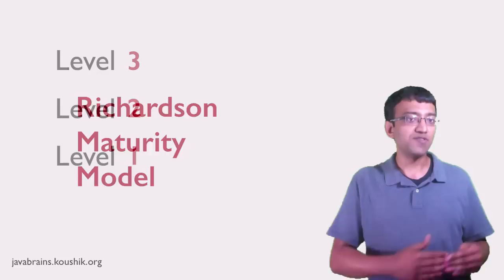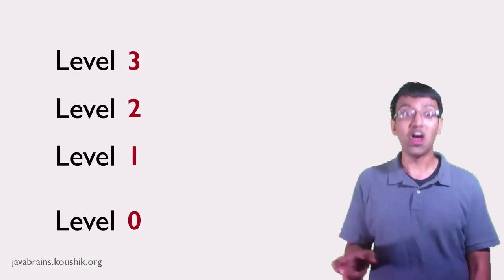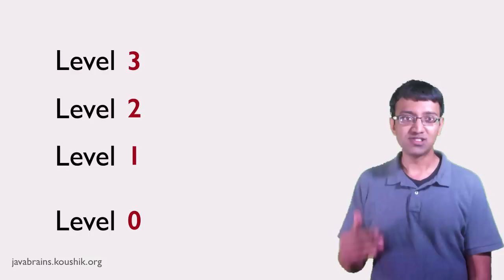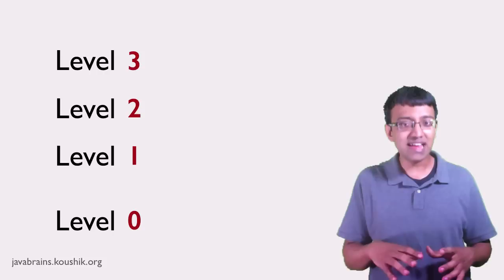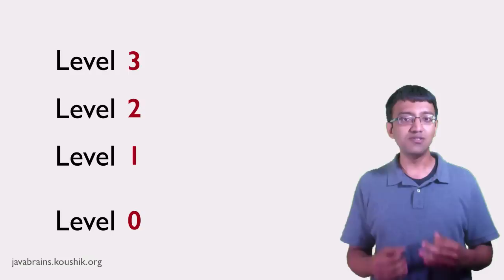The model also defines a level zero, which is not a RESTful API. So there are four different levels actually — one is not a RESTful API, and then three different levels for each RESTful API. It's not necessary that every API score highly on this model, but it helps to understand it when designing any RESTful API so that at least you know where you stand and can try to make it better if possible.